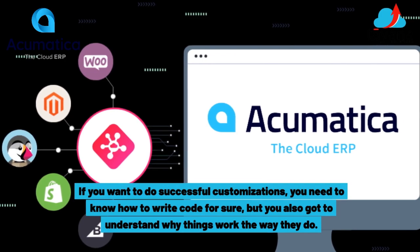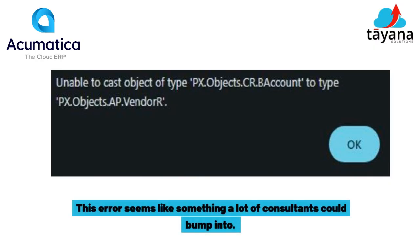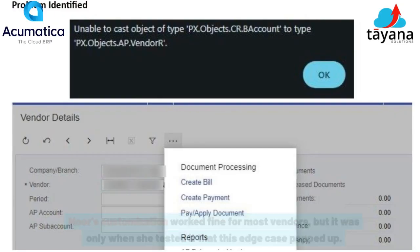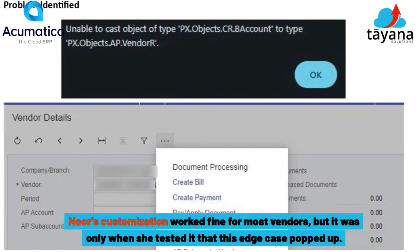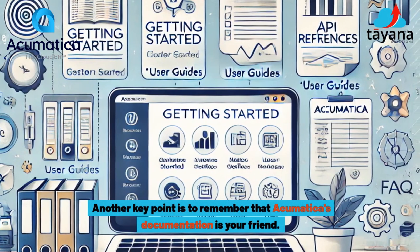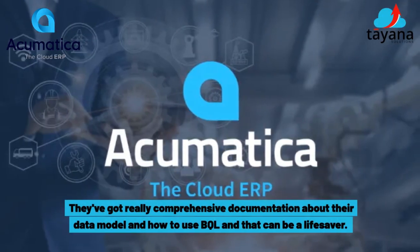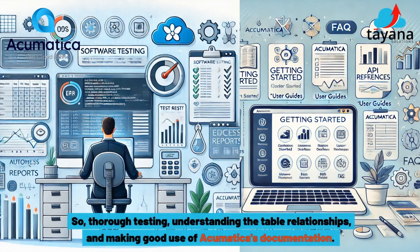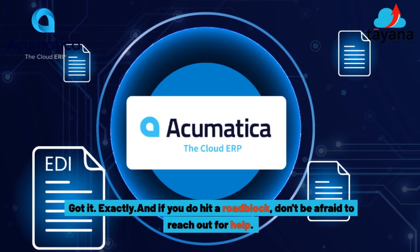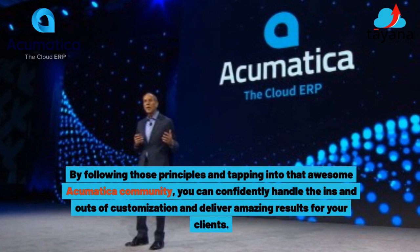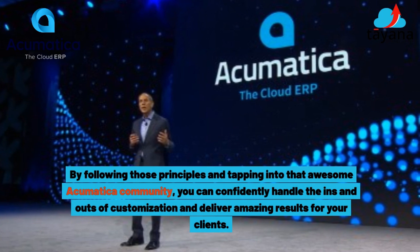It's a perfect example of why it's crucial to really grasp Acumatica's data model if you want to do successful customizations. You need to know how to write code for sure, but you also have to understand why things work the way they do. For takeaways: first, thorough testing — Noor's customization worked fine for most vendors, but it was only through testing that this edge case popped up. Also, remember that Acumatica's documentation is your friend. They've got comprehensive documentation about their data model and how to use BQL, and that can be a lifesaver. So: thorough testing, understanding the table relationships, making good use of Acumatica's documentation, and if you hit a roadblock, don't be afraid to reach out to the Acumatica community.